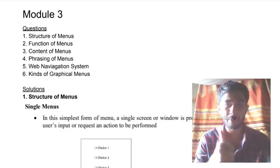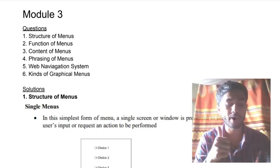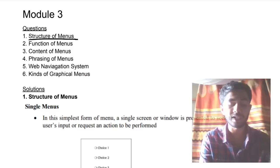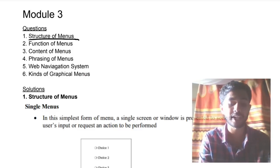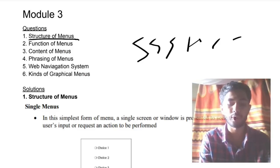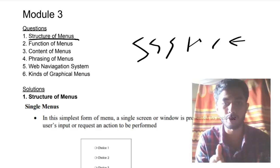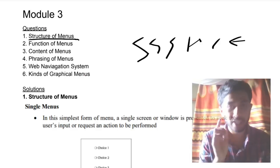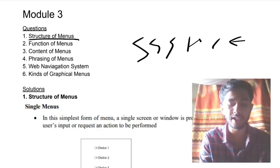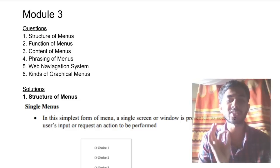Make sure you hit the like button and subscribe to my channel for more videos like this. Without wasting any more time, let's get started. The first question is: what is the structure of menus? You have to remember there are six structures of menus, and the keyword is SSS HCE. Keep that in mind till the UI exam gets over.